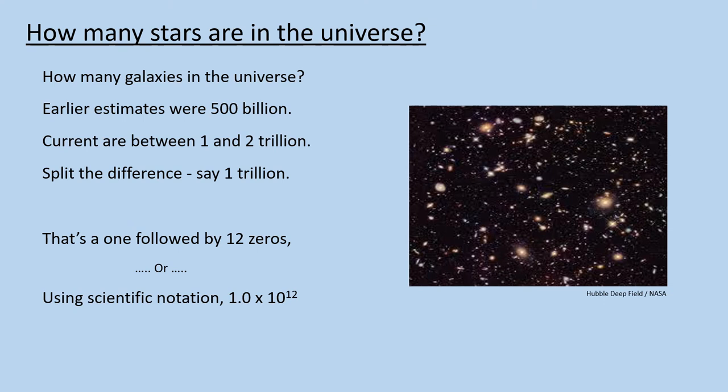Our first question was how many stars are there in the universe? We need to make a couple of guesstimates, the first of which is how many galaxies are there? Past estimates, based on observations, set that value at around 500 billion. That's a lot of galaxies. More recent estimates, based on better observations like the Hubble Deep Field, puts the value even higher, at 1 to 2 trillion. All of those estimates are quite large, but let's go with the more recent estimates and split the difference. So we'll go with 1 trillion. That number would be written as a 1 followed by 12 zeros. But using our knowledge of scientific notation, we could express it as 1.0 times 10 to the 12th. That's a bit more manageable.